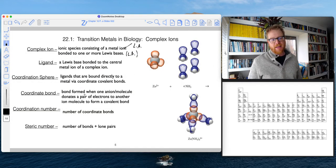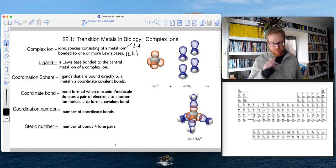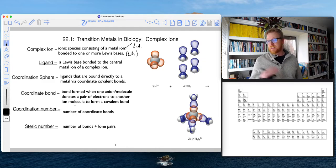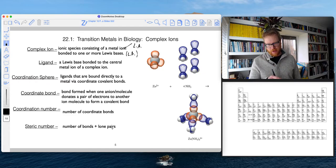So coordinate bond - that's a bond formed when one anion or molecule donates a pair of electrons bonds to another ion or molecule to form a covalent bond. So that coordinate bond is that new bond that we form from the Lewis acid Lewis base chemistry. Coordination number of course is the number of these coordinate bonds, and finally the steric number is the number of bonds plus any lone pairs that are around the central metal.